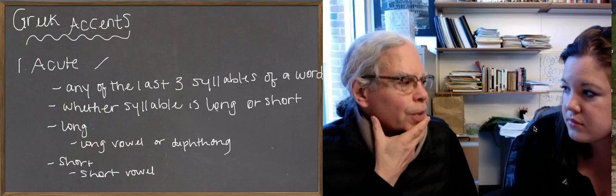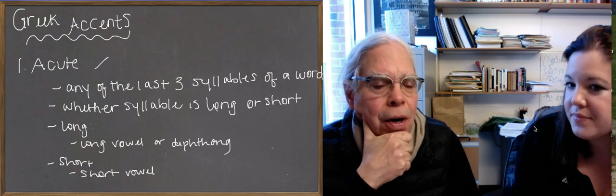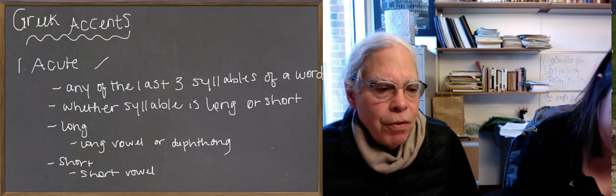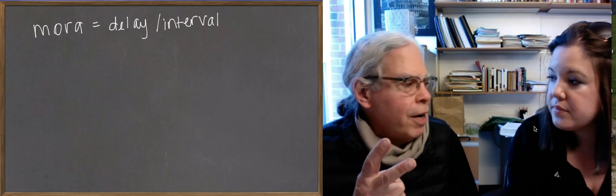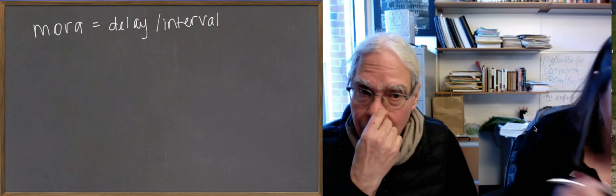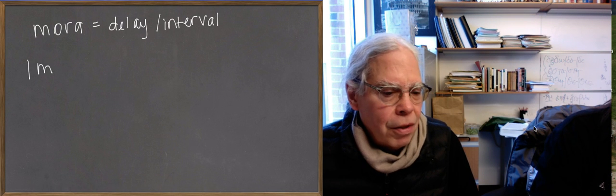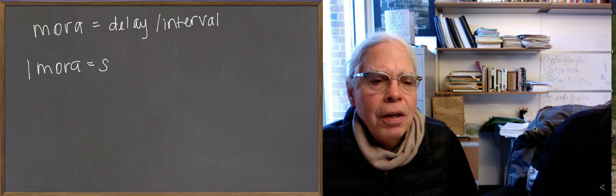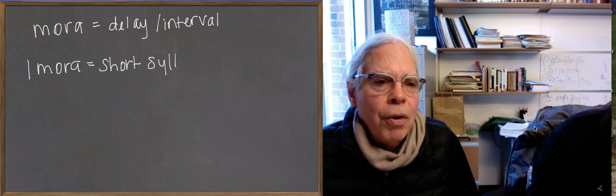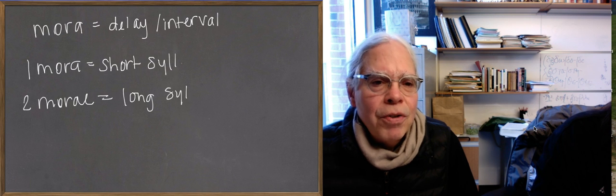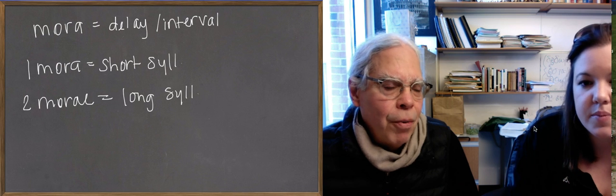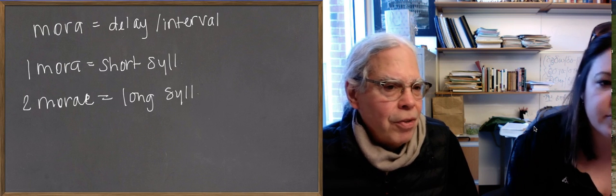In the description of Greek, we have the Latin word mora — m-o-r-a — which is just the Latin word for delay or interval. The rule from antiquity about Greek is that a long syllable is two morae, and a short syllable is one mora. This is a fancy way of saying that a short syllable is half as long as a long one, or a long syllable is twice as long as a short one, but it doesn't tell you how long they are in absolute terms.